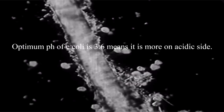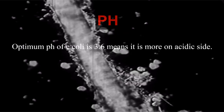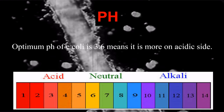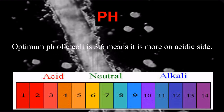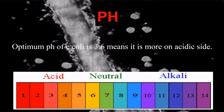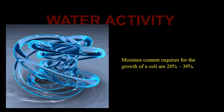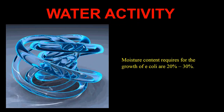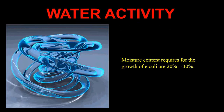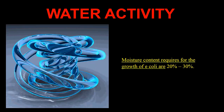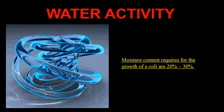pH: The optimum pH of E. coli is 3.6, meaning it is more on the acidic side. Water activity: The moisture content required for the growth of E. coli is 20% to 30%.